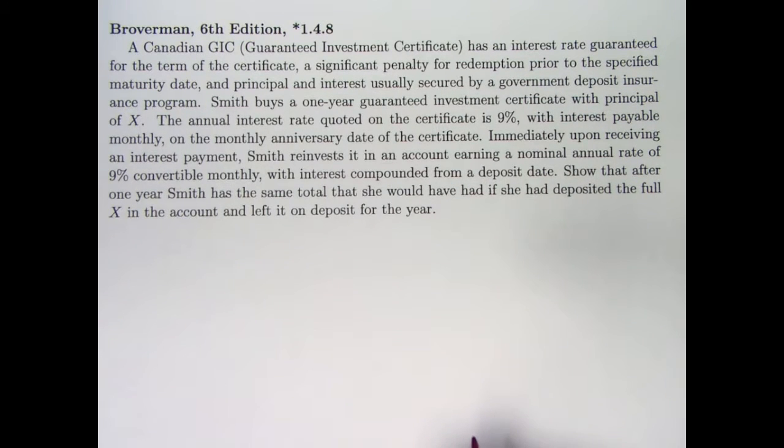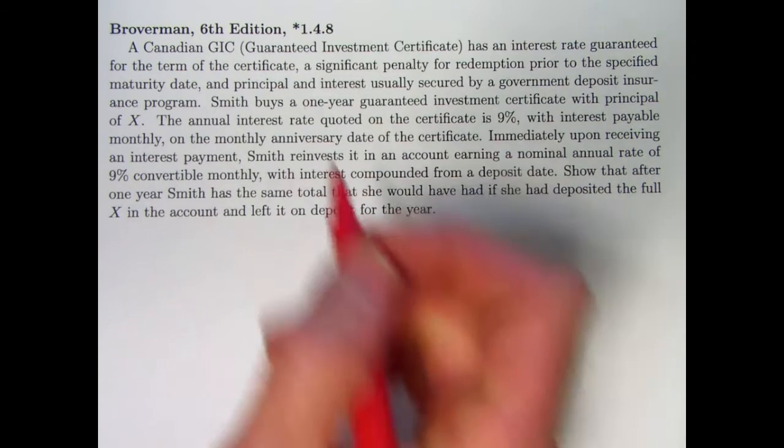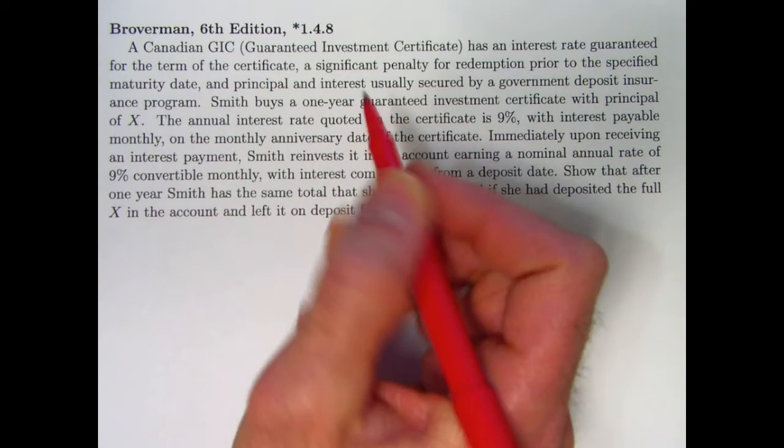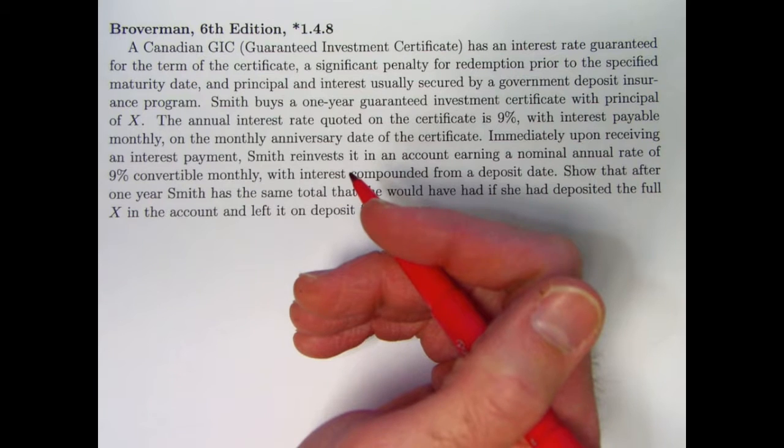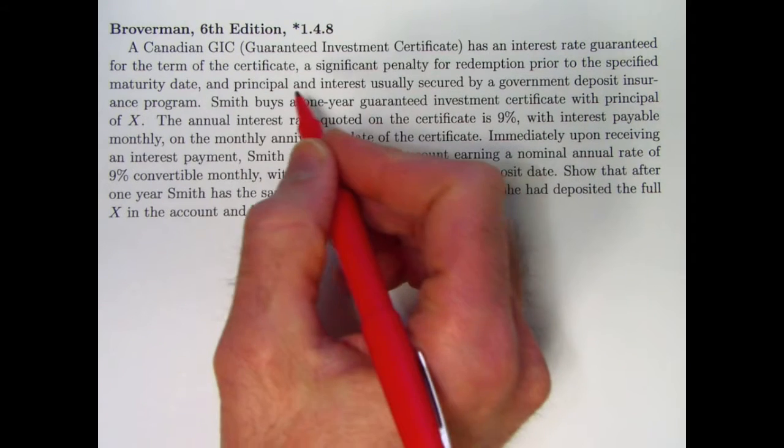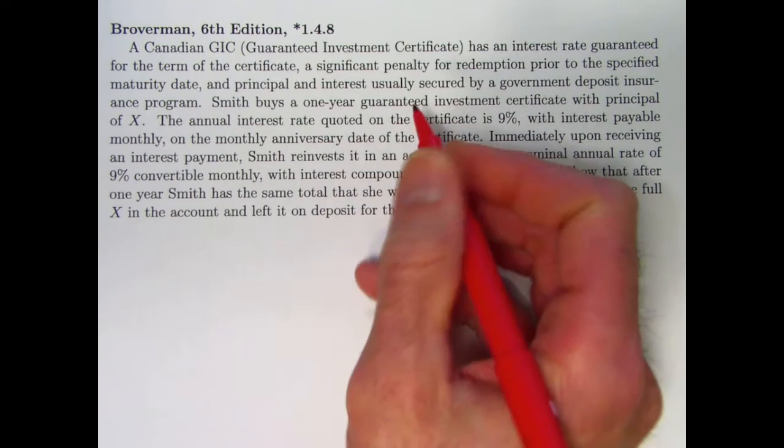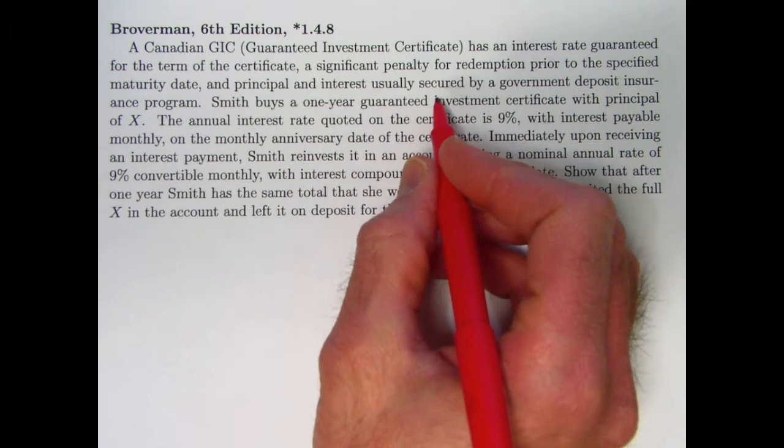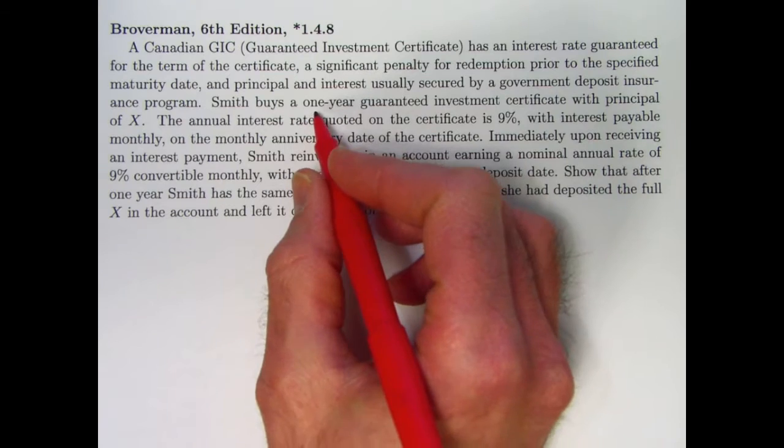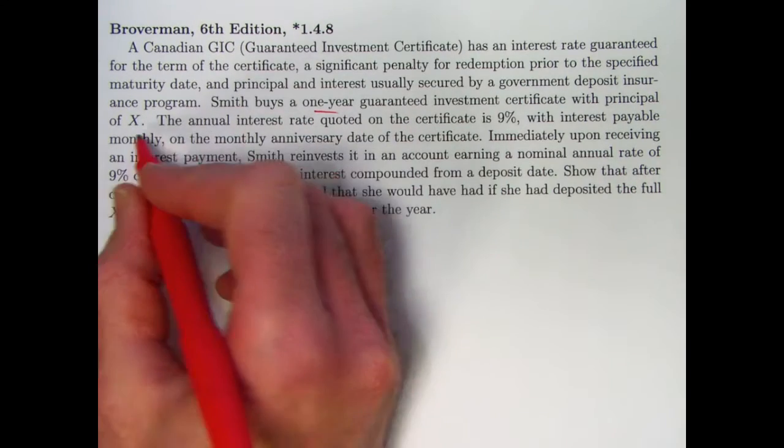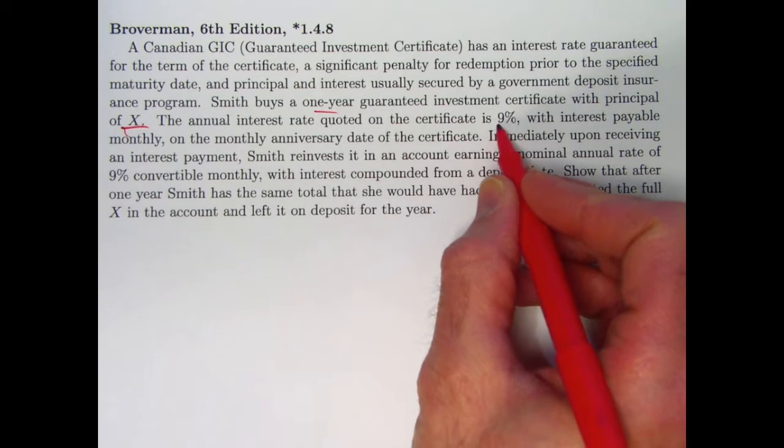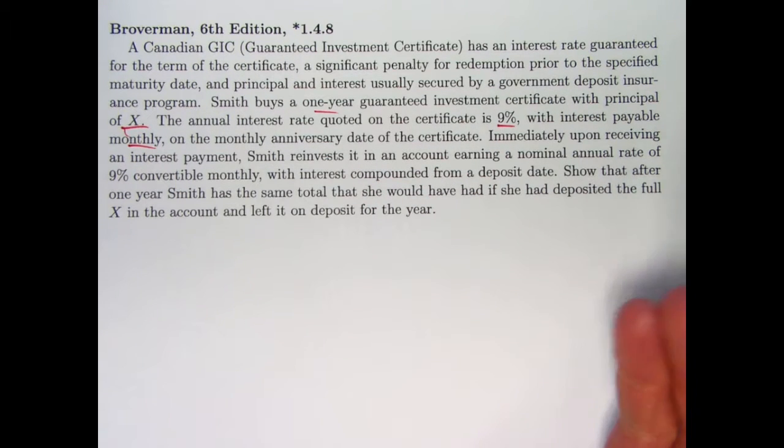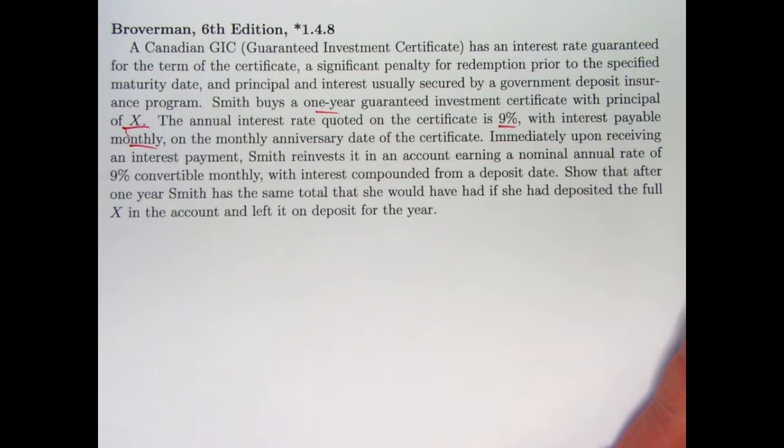Here's the description. The first sentence is kind of a preamble giving background. You've got this Canadian GIC, which stands for Guaranteed Investment Certificate. It's an investment vehicle in the Canadian government with a guaranteed rate for the term. There's a penalty for redemption prior to the specified maturity date, although we're going to ignore that penalty. Smith buys a one-year guaranteed investment certificate with principal of X. The interest rate is quoted as 9% payable monthly, so that will be a nominal rate compounded monthly.